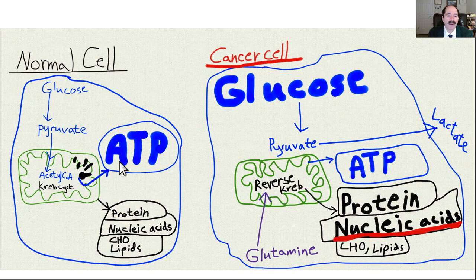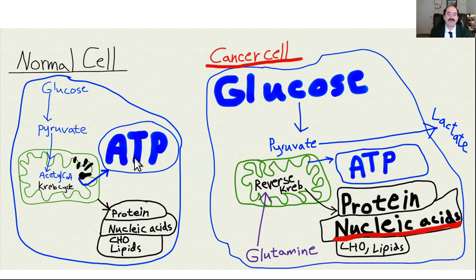A cancer cell has different needs than a normal cell. A normal cell primarily makes energy to do work — it's a team player that exists to do the job of its organ system, like the liver or kidney. Multi-cellular organisms are sophisticated because they have specialized tissue for different functions. Most of a normal cell's glucose gets burned to make energy for the cell to do work, with a little bit going to building blocks of biomolecules.